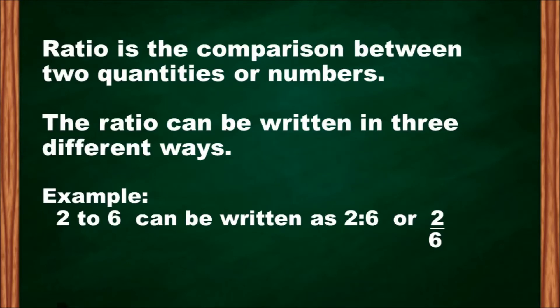Ratio is the comparison between two quantities or numbers. The ratio can be written in three different ways. For example, 2 to 6 can be written as 2 colon 6 or 2 over 6.